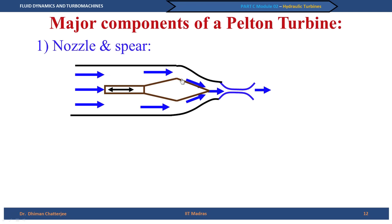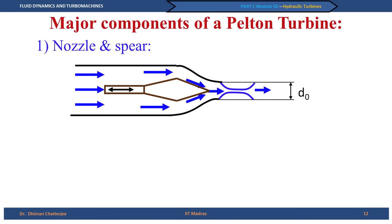Why do we need such an arrangement rather than a simple valve? The reason is we want minimum loss in the nozzle — minimum restriction on flow without incurring major loss. Hence the spear is an essential component and we cannot use any valves. We define d_0 as the nominal diameter of the nozzle exit and d_j as the jet diameter. More often we will use the jet diameter d_j than d_0.